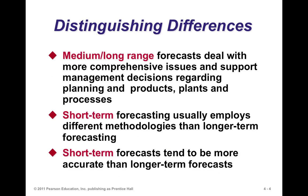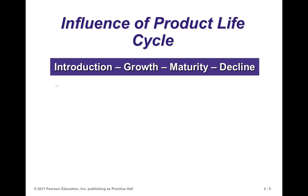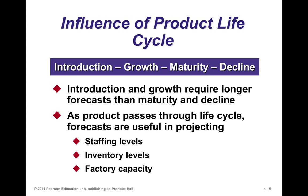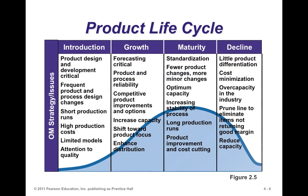The product life cycle influences forecasting approaches. In the introductory stage, demands are typically low, things are highly variable, and you may not have a good handle on forecast accuracy. As you get into the growth stage, forecasting becomes critical. Trend models tend to be useful here because you're experiencing growth — which could be linear or curvilinear — and you could use a linear approximation to that growth.